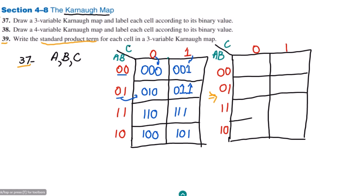For each cell, we have to write the standard product term such that the product of the variables equals 1. For the first cell, A=0, B=0, C=0 — all three are zero, so the product would be zero. To get the product equal to 1, we complement all of them, giving us A' · B' · C'.